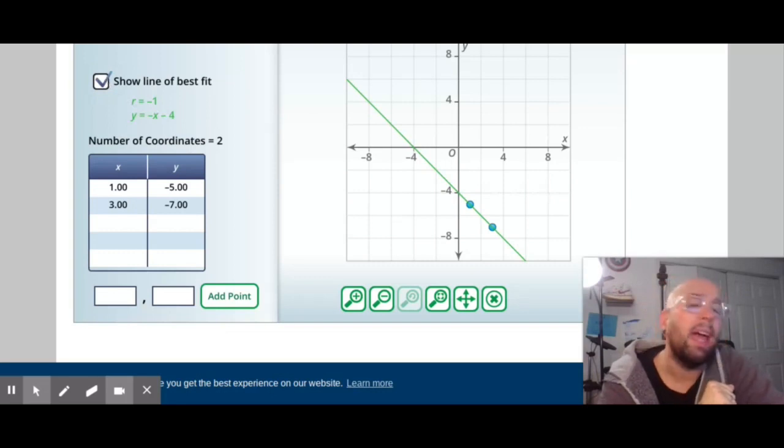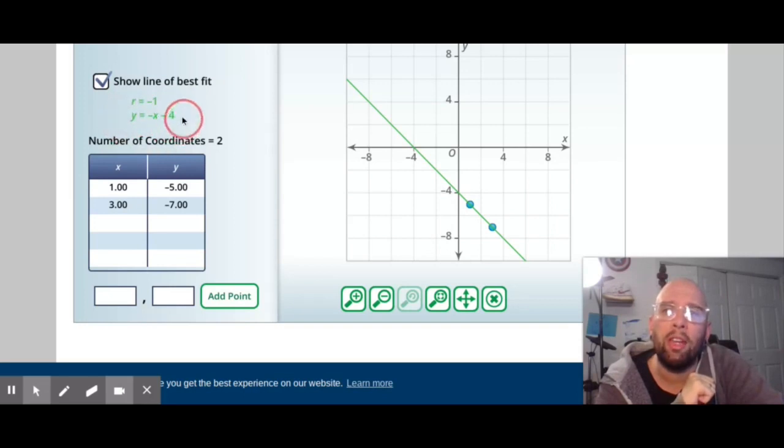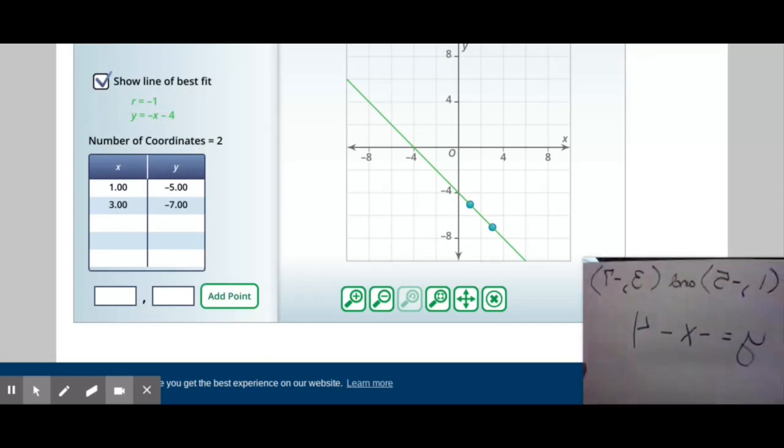Once you have at least two points typed out you can click on the show the line of best fit and it gives you the equation for the line of best fit. In this case my equation for line of best fit is y equals negative x minus four as seen right there in the picture.